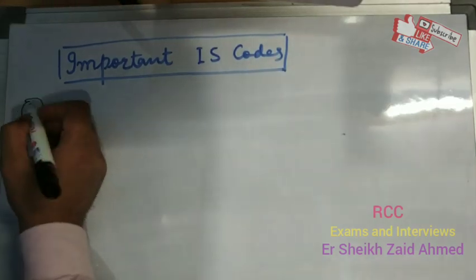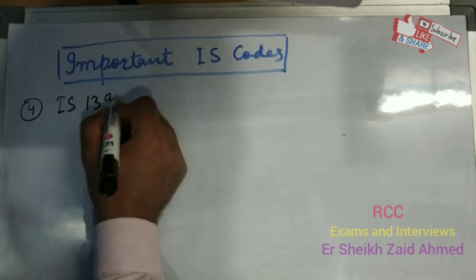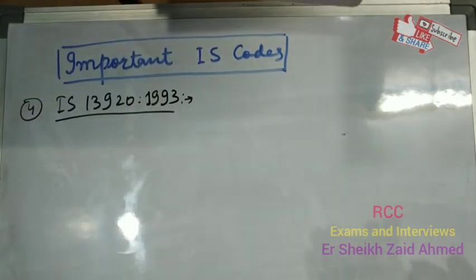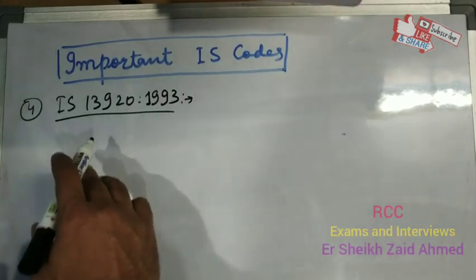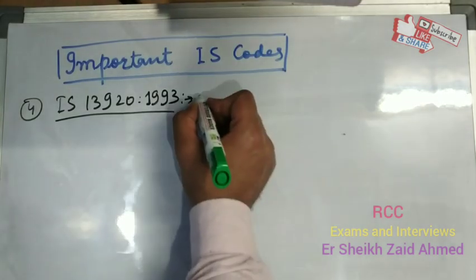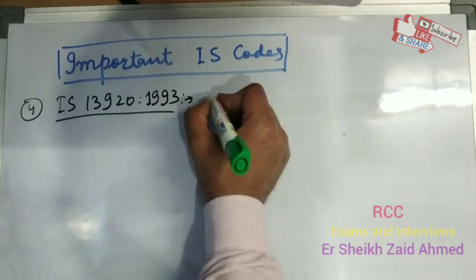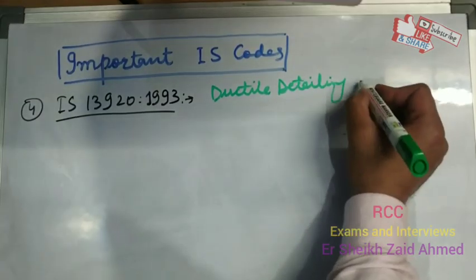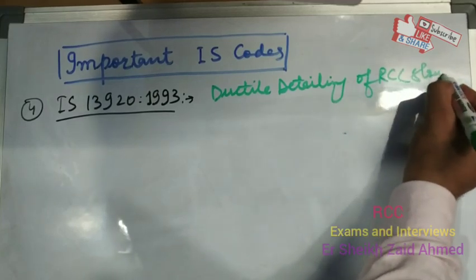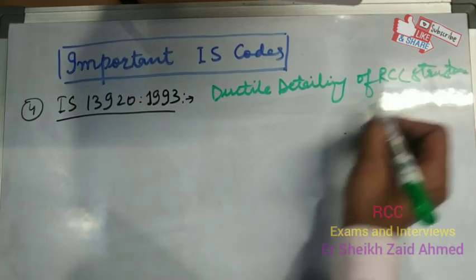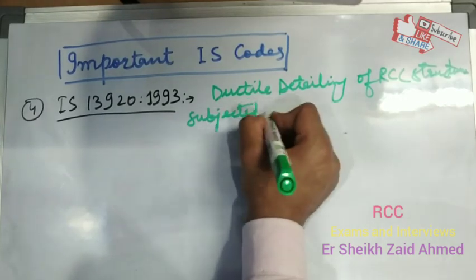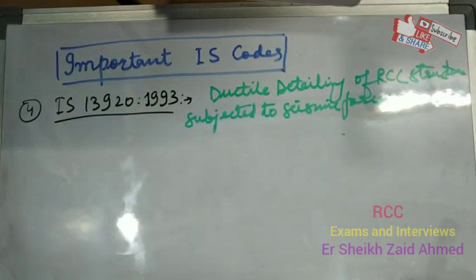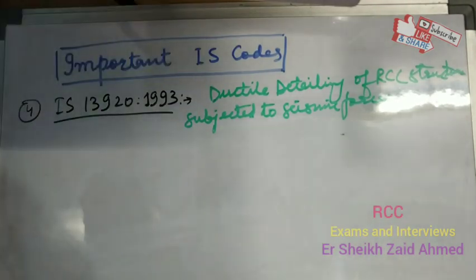The next one is IS-13920-1993. Its parts may have been revised in 2014 or 2016, but I am only concerned with the use of this code. IS-13920 is regarding ductile detailing of RCC structures subjected to seismic forces. If you have to do the ductile detailing of RCC structures subjected to seismic forces, we refer this code.